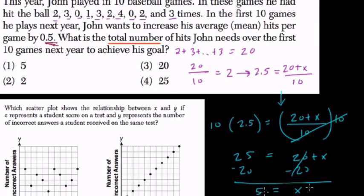But when we found 5 here, what did we actually find? That's the number of hits he needs in the next game to attain this average. But they wanted the total number of hits.